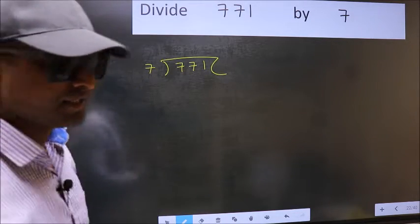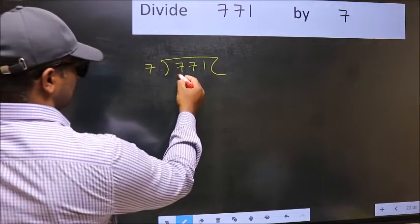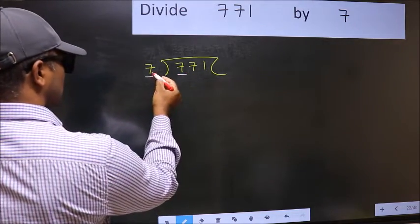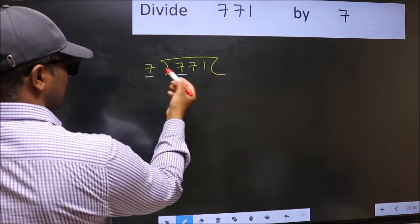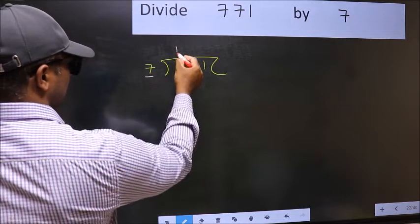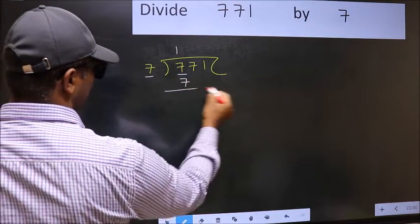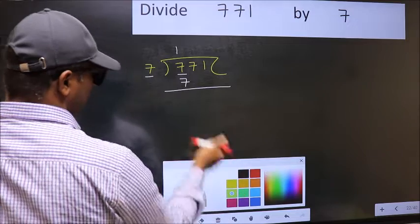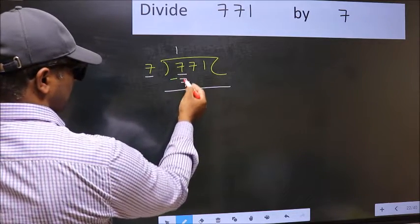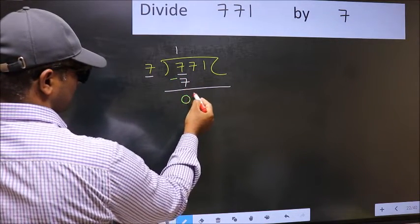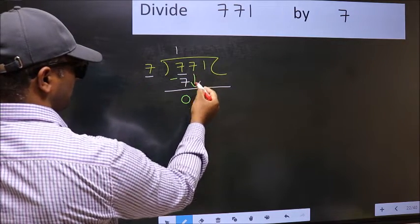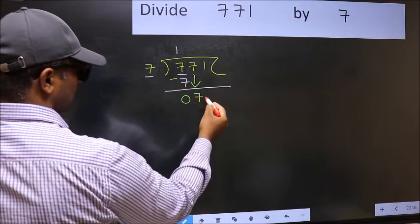Next, here we have 7 and here also 7. When do we get 7 in the 7 table? 7 once is 7. Now you should subtract. 7 minus 7 is 0. After this, bring down the beside number. So 7 down.